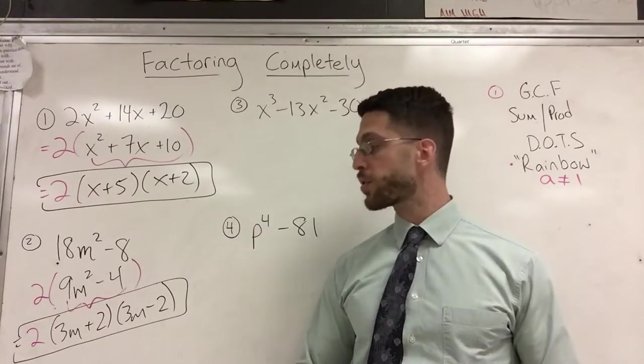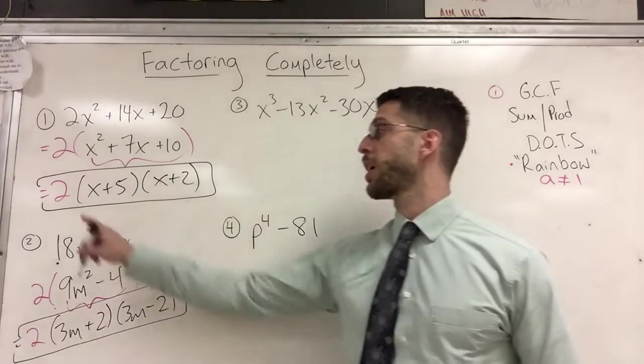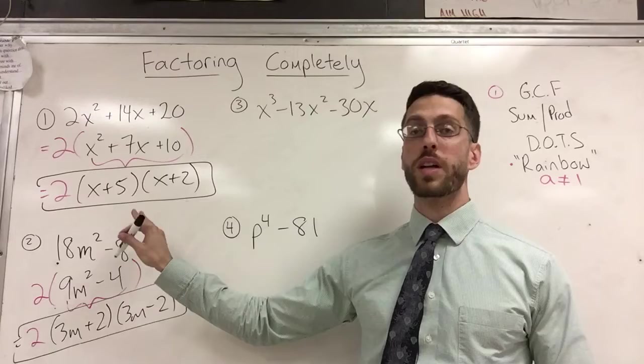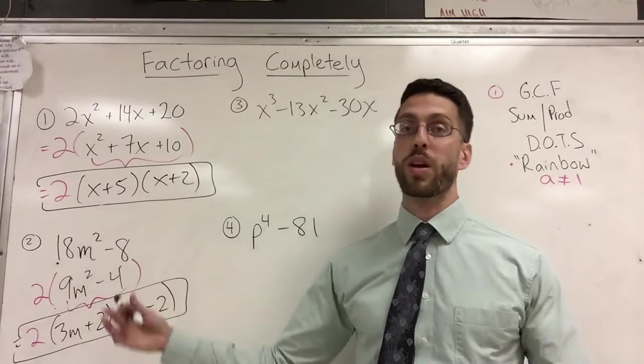Don't forget to drop down the two. That was the original GCF. And there is your factored completely form. If you're not sure, ask yourself: can I go further? Can I factor this? Can I factor this? Can I factor this? No, stop. Can I factor this, this, or this? If no, stop. When I ask if I can factor this, maybe look for another GCF, or is this a DOTS, or whatever.